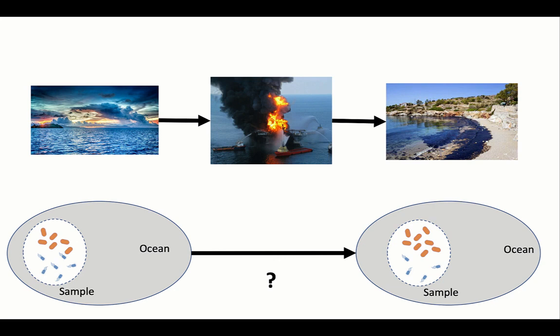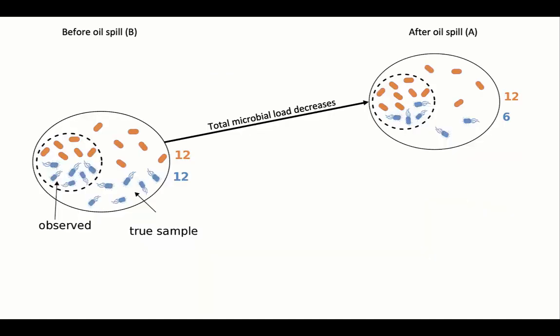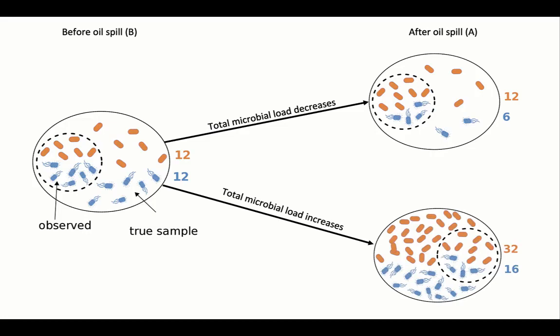The question is, given these observations, what can we infer about what happened to these microbes? Did the blue microbes decrease in abundance, or did the orange microbes increase in abundance? One possibility is that the blue microbes halved after the oil spill. Another possibility is that both microbes increased in abundance. Both of these scenarios will give us the same proportion of microbes. The only difference between these two scenarios is the difference in the total microbial biomass. Our collected buckets cannot distinguish between these two different scenarios since we don't know how many microbes there are in the entire ocean.